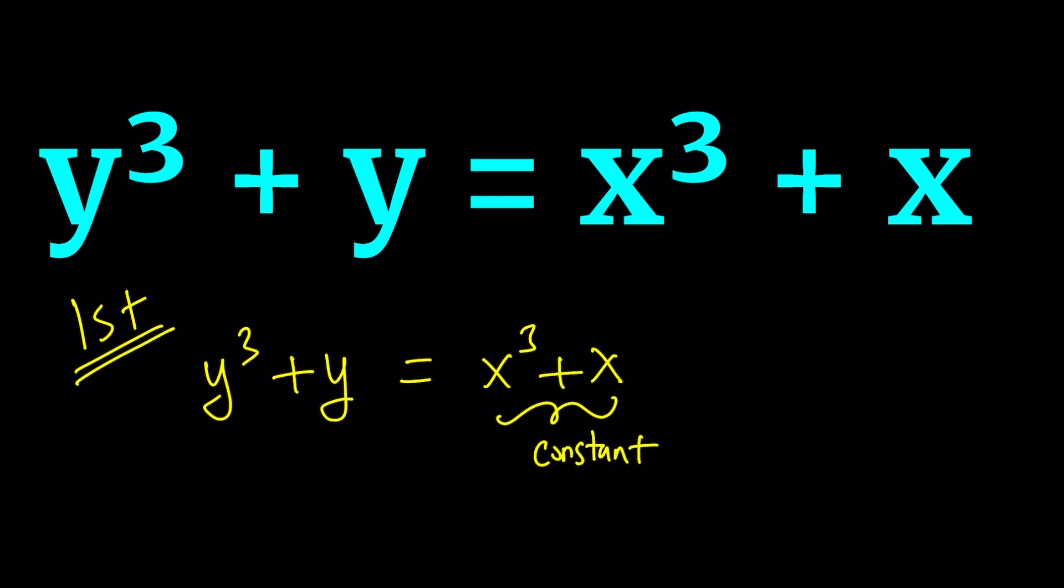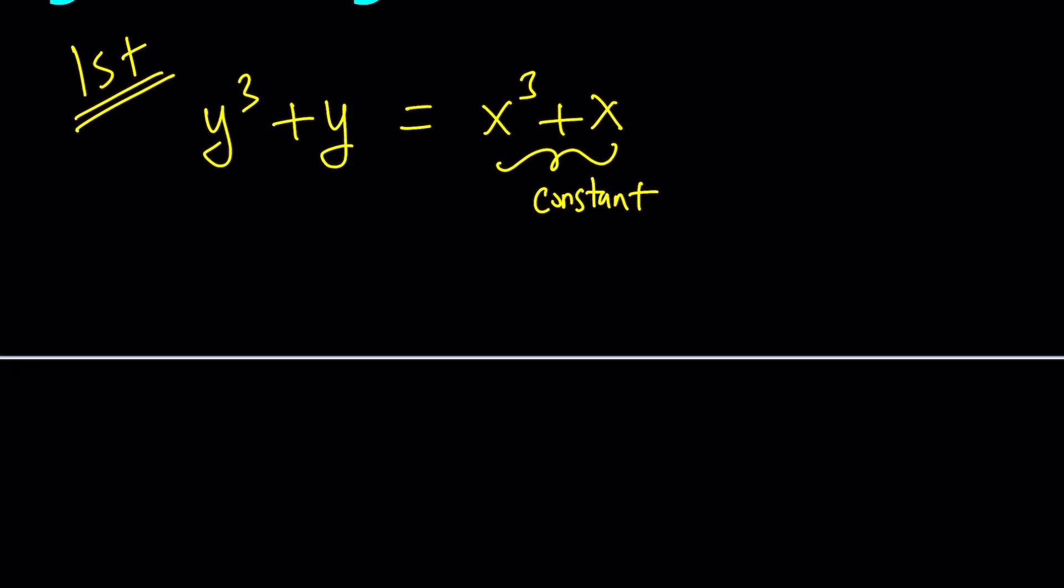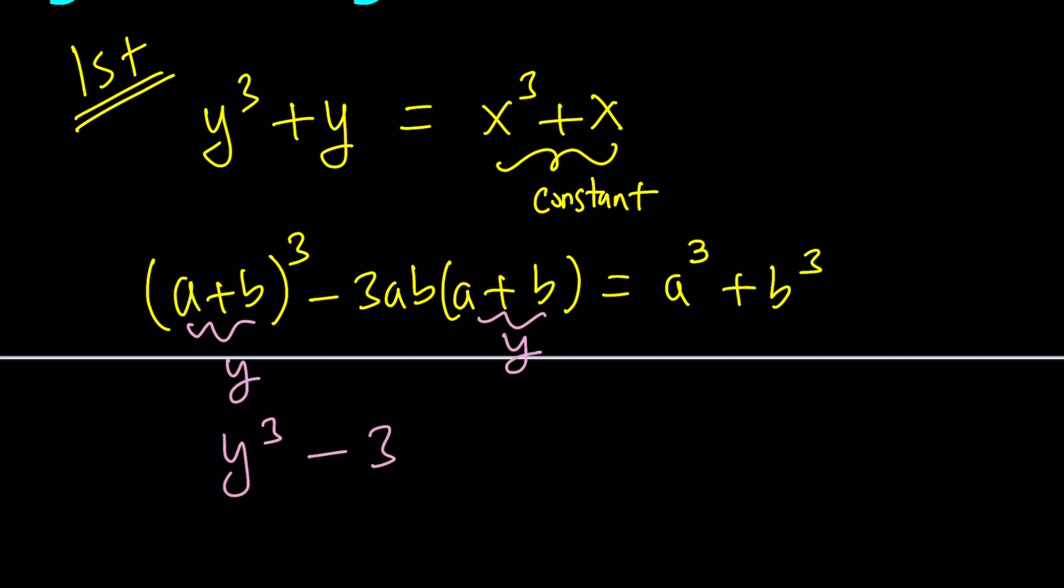When you solve for y, obviously that's what you do. And the way the cubic formula works is if you think about it, for example, I can write this as (a + b) cubed minus 3ab times (a + b) gives us a cubed plus b cubed. That's an identity you should know. And this is something we use for the cubic formula.